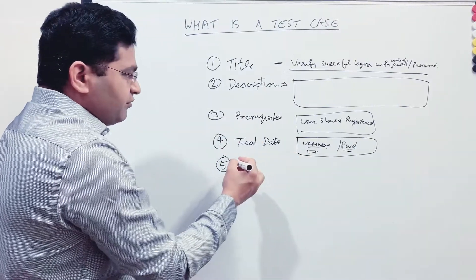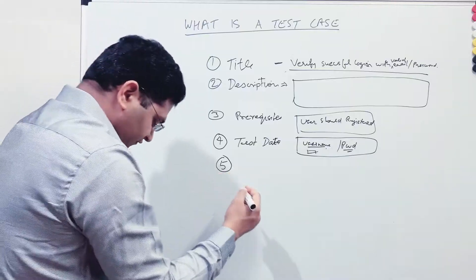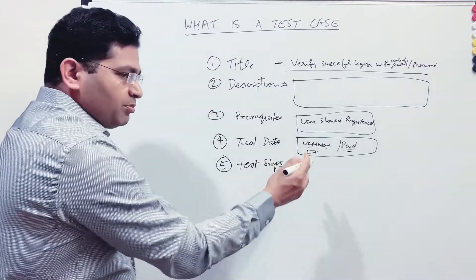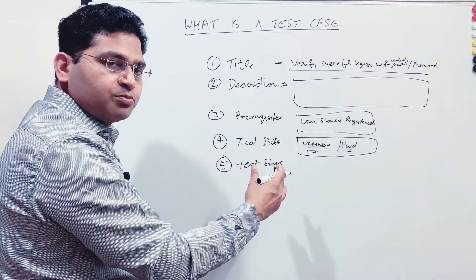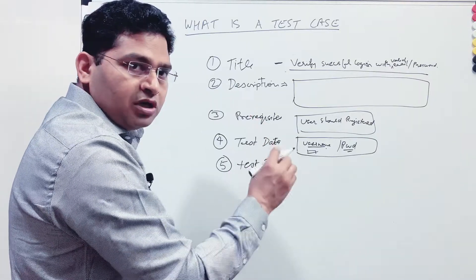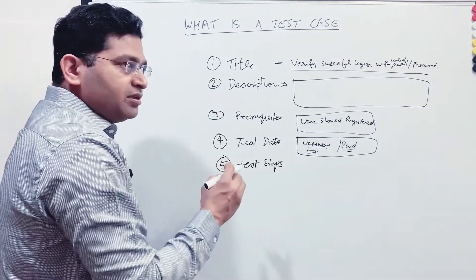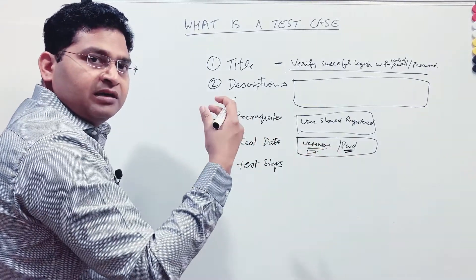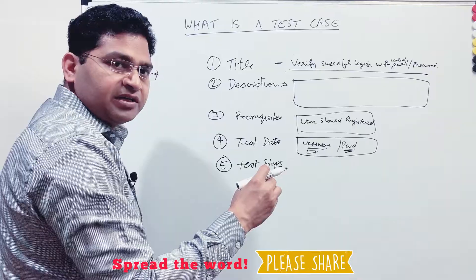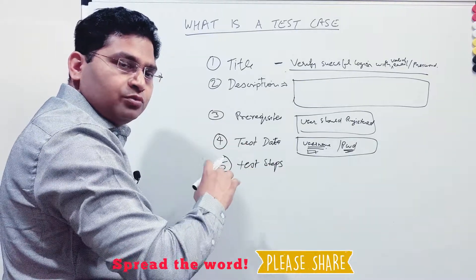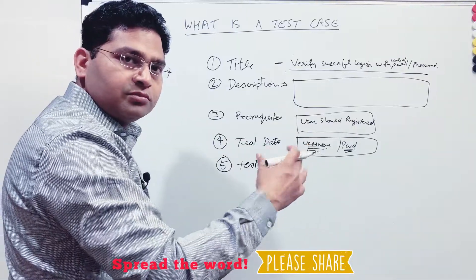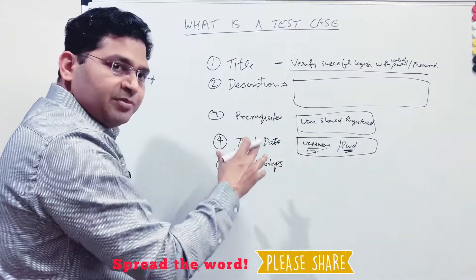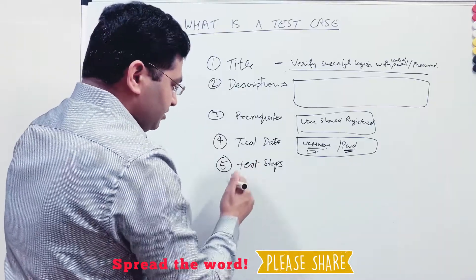The fifth very important piece of information is about the test steps - what steps a person needs to follow. Step one: launch the website or the e-commerce portal. Step two: click on the login link on the e-commerce portal. Step three: enter the username and password that is present in the test data field and press the login button. Step four: verify whether it's redirected to the homepage or perform the step on the homepage. These are some of the steps that need to be present in the particular test case.